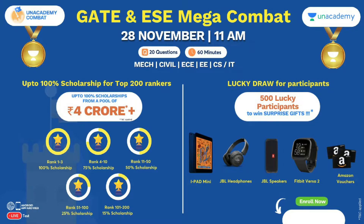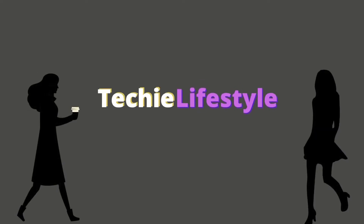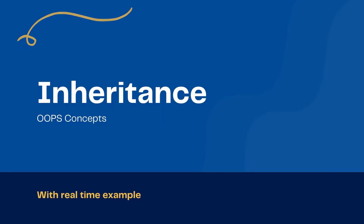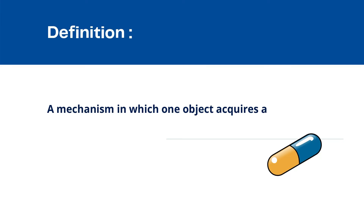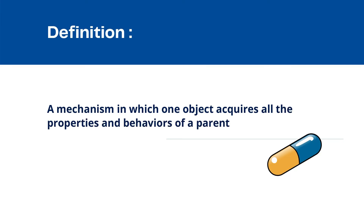Now let's jump into the video. The famous definition for inheritance: it is a mechanism in which one object acquires all the properties and behavior of a parent object. If a child class is inheriting the properties and behavior of a parent class, then this mechanism is called inheritance.